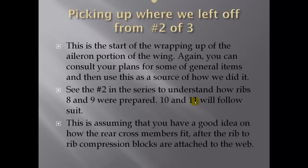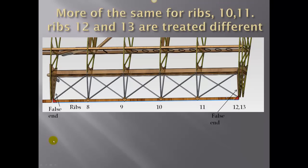This is assuming that you have a good idea on how the rear cross members fit, and that's going to be shown here very shortly. Right here is what I'm calling the false rib, that's the first rib of the aileron, and a second false rib which is the last one. We did not make those parts in the fixture plots. And then we have rib eight, nine, ten and eleven, twelve and thirteen. We'll get through those a little bit, but they've got their own unique properties, keep that in mind.